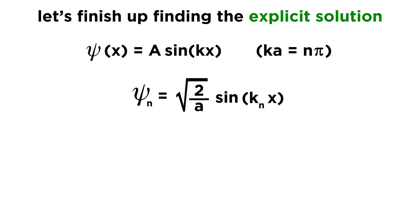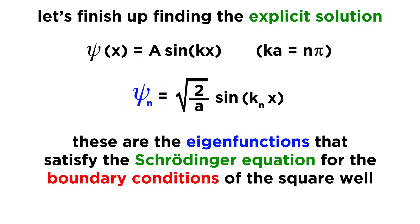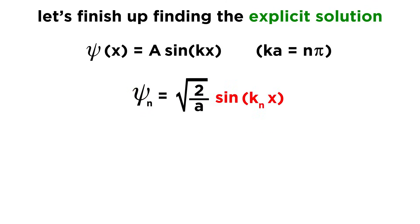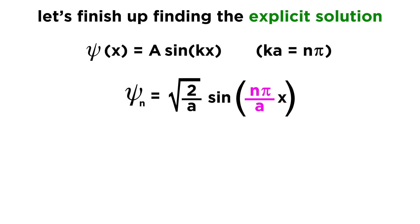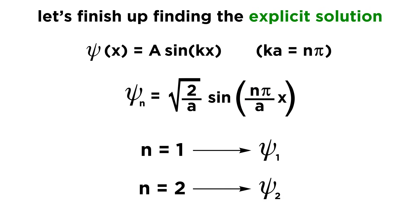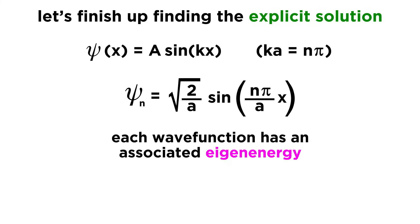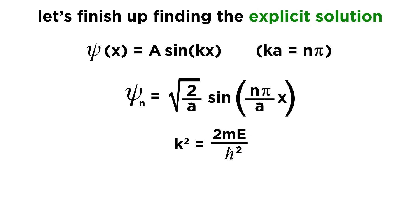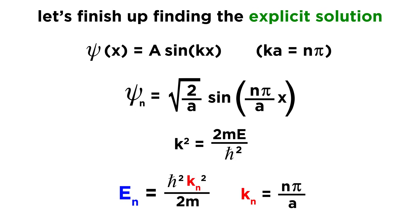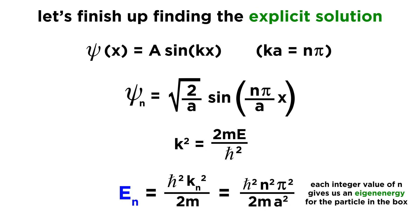We can now express the solution as a set of eigenfunctions: psi sub n equals the square root of 2 over a, times sine of k sub n times x, where k sub n equals n·pi over a, and each integer n gives a different wave function. Each eigenfunction has an associated eigenenergy: E sub n equals h-bar squared k sub n squared over 2m, which equals h-bar squared n squared pi squared over 2m·a squared.